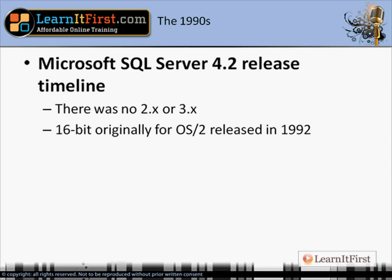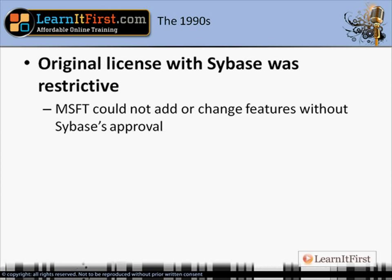Version 4.2 was actually released in a 16-bit version for OS2 in 1992. The following year, Microsoft came out with Windows NT, and that was a 32-bit release of 4.2. So it was a bit odd — they released 4.2 in 1992 and then re-released 4.2 in 1993, simply to port it from OS2 to Windows. They decided no 16-bit for Windows — they were going full 32-bit.